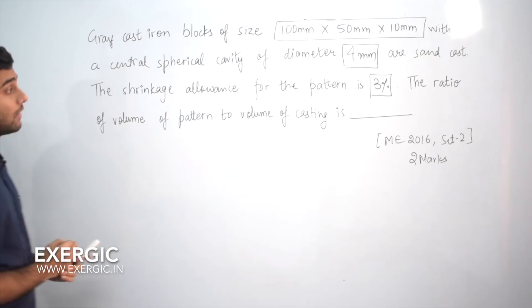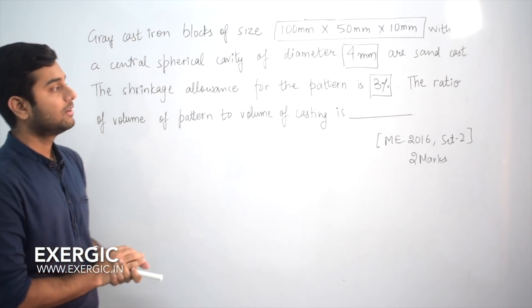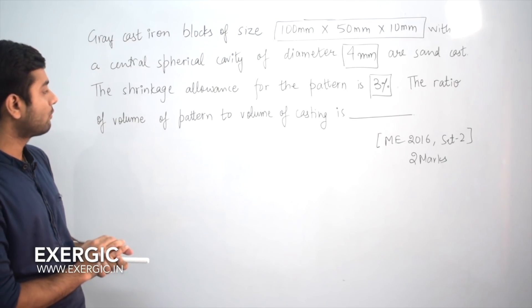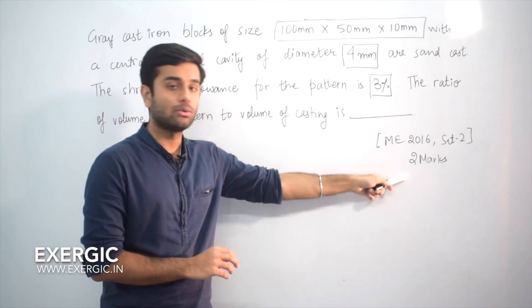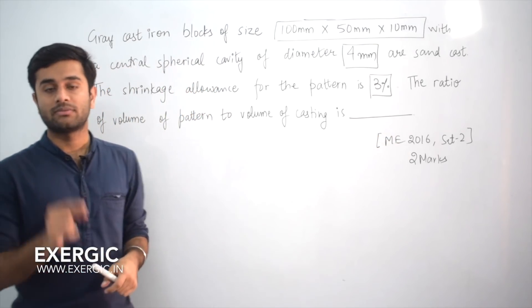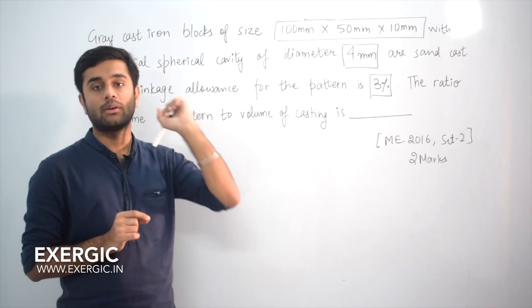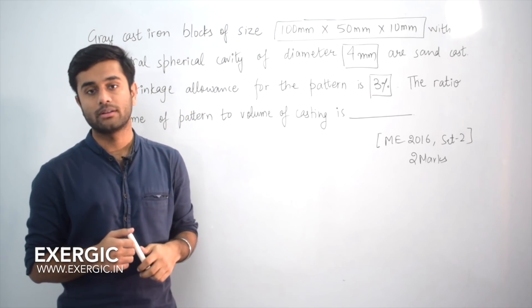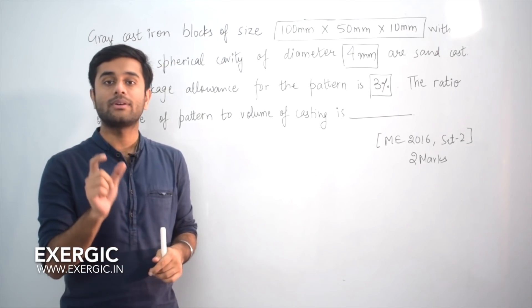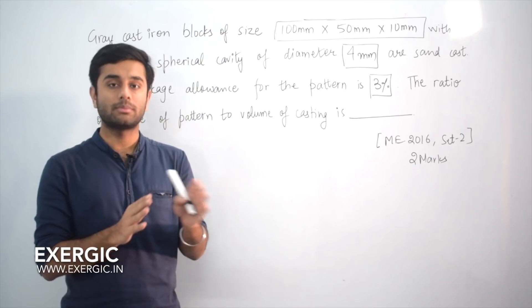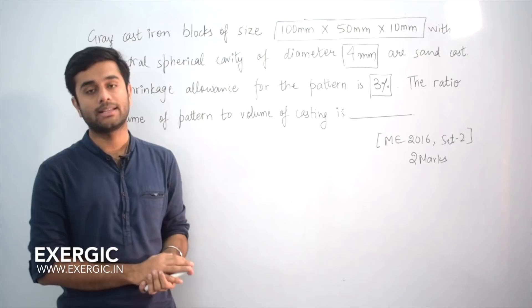The shrinkage allowance for the pattern is 3 percent, given in percentage. The question is asking the ratio of volume of pattern to the volume of casting. A previous year question, set to 2 marks. The first thing that will come to your mind is it has given the pattern allowance in percentage. So how to do it? Because I told you that generally the pattern allowance is given as a linear dimension, not in percentage - as a linear dimension like 10mm per meter, 15mm per meter like that.